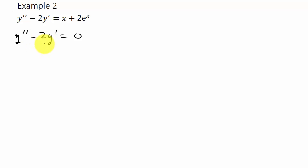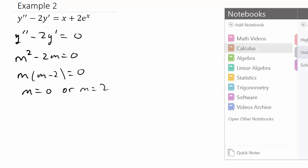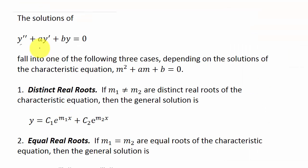To solve this, we use the characteristic equation, which gives us m squared minus 2m equals 0. We factor out the m, so we get m equals 0 or m equals 2. When you have a differential equation set equal to 0, it falls into one of three cases.